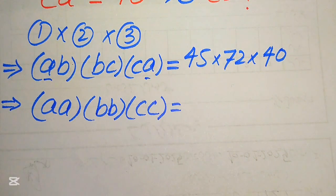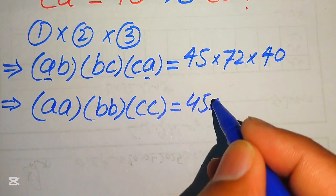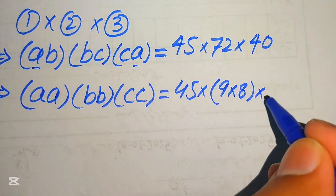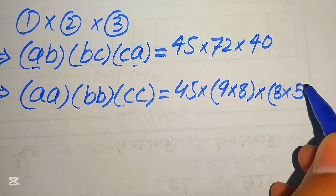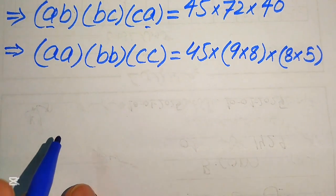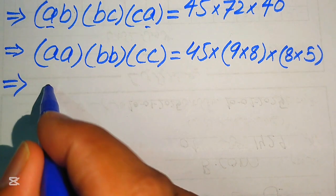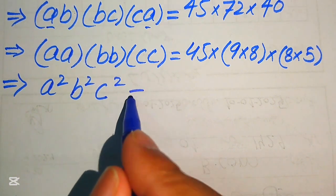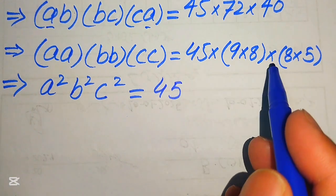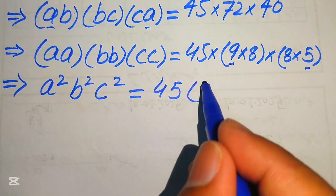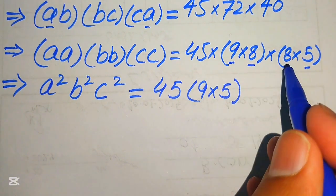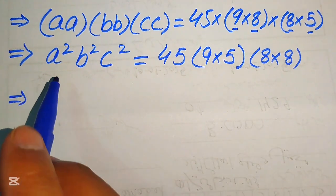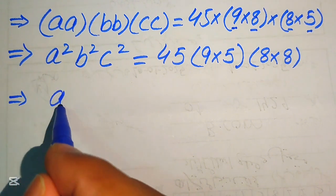On the right-hand side we need some simplification. We have 45, we write 72 as 9 times 8, and we write 40 as 8 times 5. So A times A becomes A squared, B times B becomes B squared, C times C becomes C squared. On the right side we rearrange: pairing 9 with 5 gives 9×5, and pairing 8 with 8 gives 8×8. We combine these as a square.